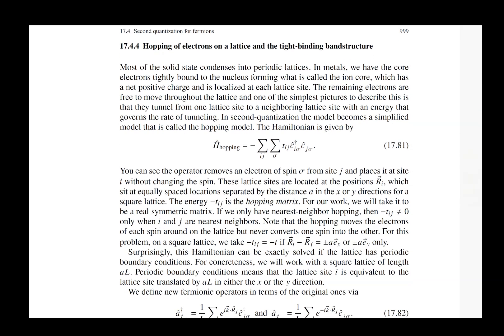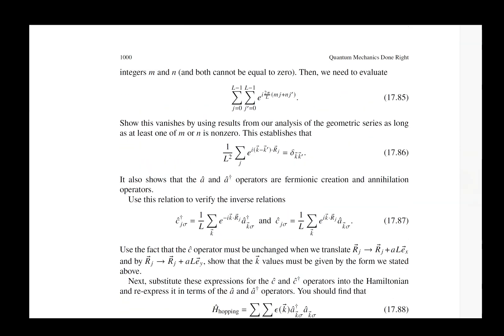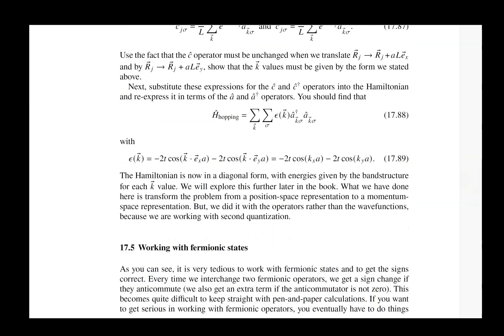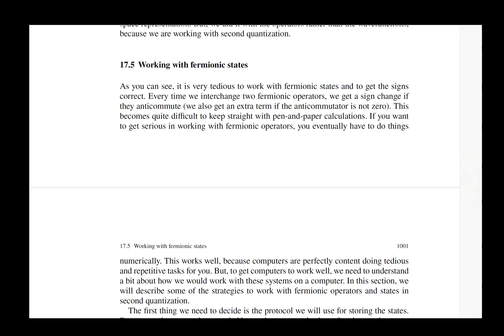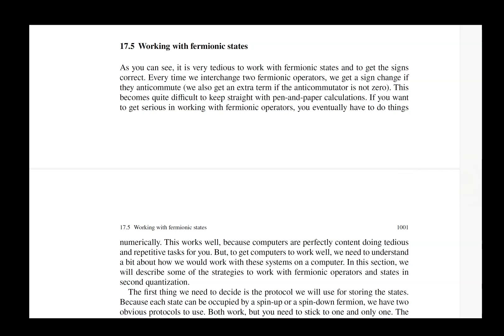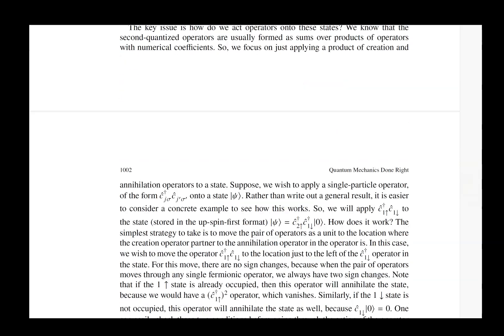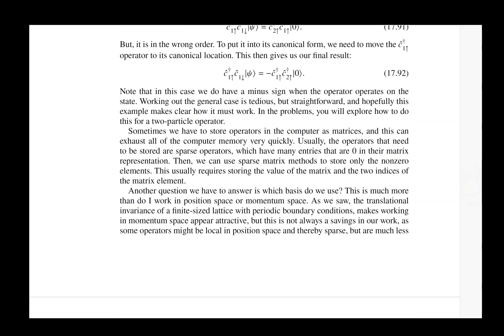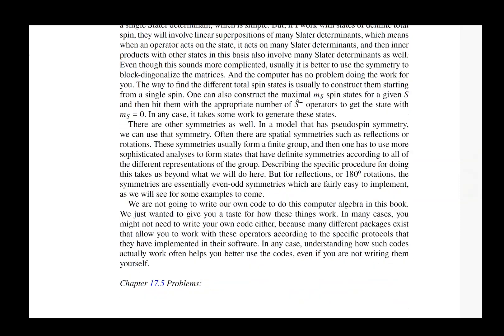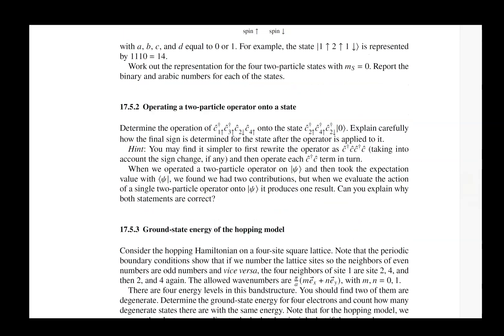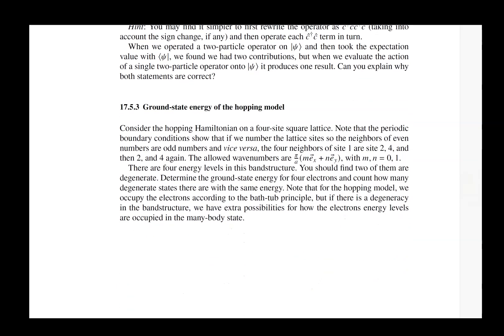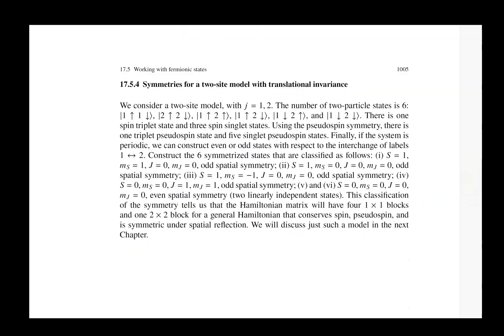Then we talk about hopping of electrons on a lattice, called the tight-binding model, which is a standard way of describing non-interacting electrons in solids. This leads to things like Fermi surfaces. We give a brief summary of how things work, and then consider how you actually work with these states computationally. We take time discussing the different issues you have to worry about when doing calculations with fermionic states, and we get practice through what are called small-cluster exact diagonalization studies, which involve working directly with operators acting on states.